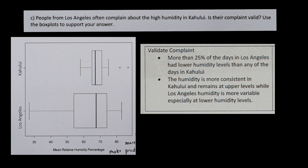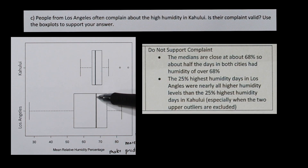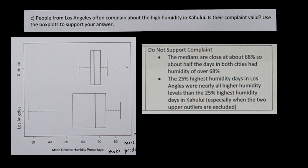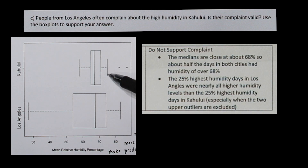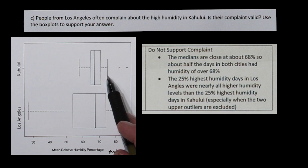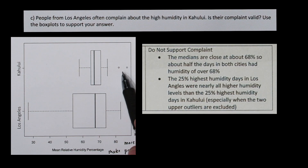There are also things that refute the complaint. First, the medians are really close — the bold middle line in both box plots — meaning half of the days in both cities have humidity levels higher than about 68%, suggesting both cities have equally high humidity. Also, the highest 25% of humid days in Los Angeles are higher than nearly all the humidity levels in Kahului, though that's only when excluding the two outliers. With only 50 days of data, we may not want to exclude those outliers, as in a larger data set they might appear more often. So which way you answer is up to you — just make sure you can support it.